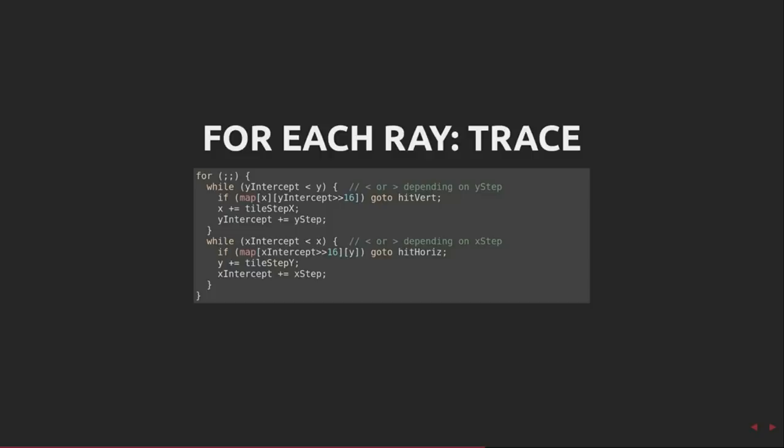We check the map cell at x, which is a plain integer, and the integer part of the fixed point representation of y-intercept. If the map is non-zero, we've hit a wall, and so go off to process this vertical wall hit.